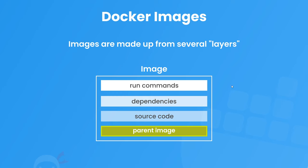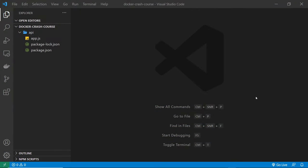But how do we actually create our own Docker image with all of these different layers? It's pretty simple — we just create something called a Dockerfile, which is like a set of instructions to Docker to create the image. The Dockerfile essentially lists out all of these different layers or instructions to create those layers on an image.